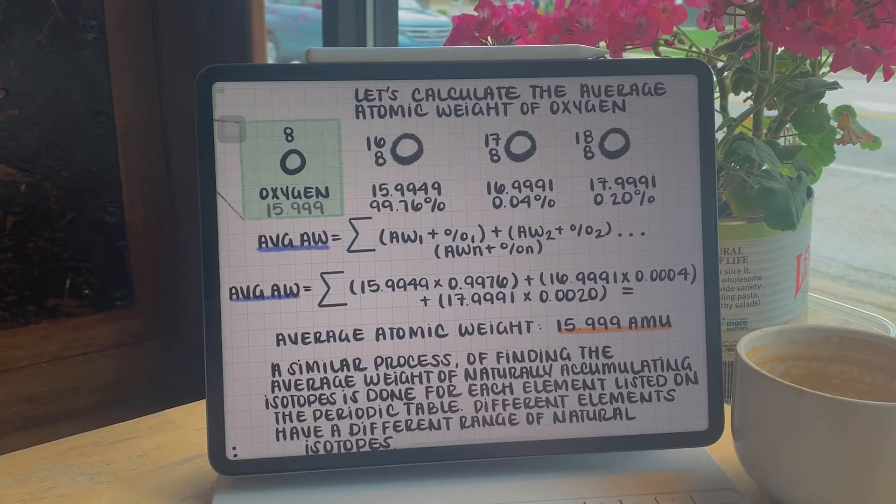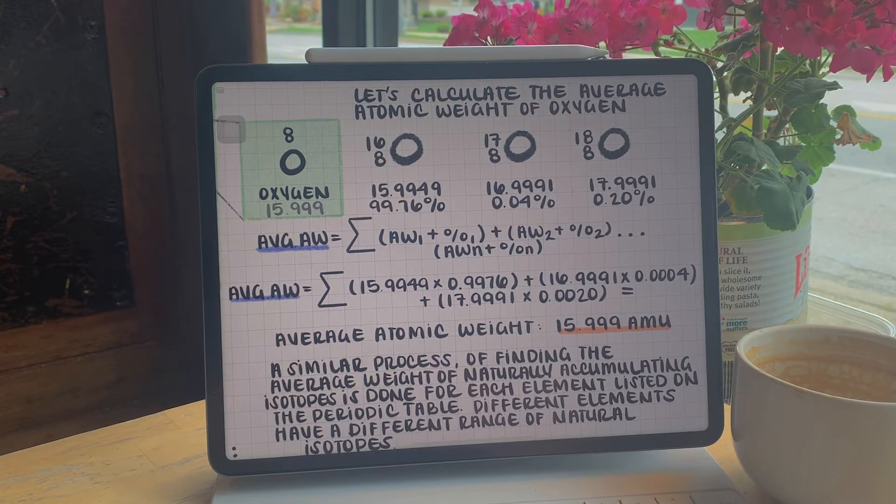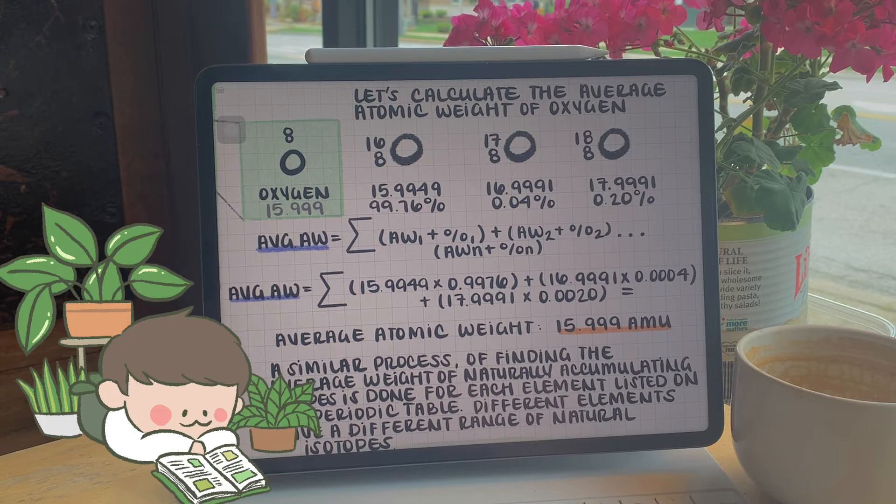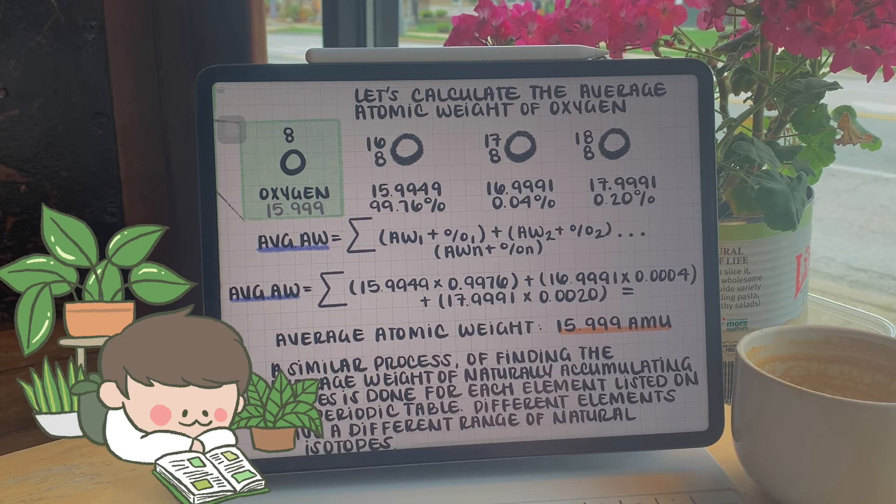For example, take into account these three isotopes of oxygen. Oxygen-16, 17, and 18. 16 with a 99.76% abundance, 17 with 0.04% abundance, and 18 with 0.20% abundance.